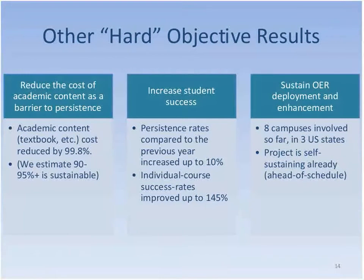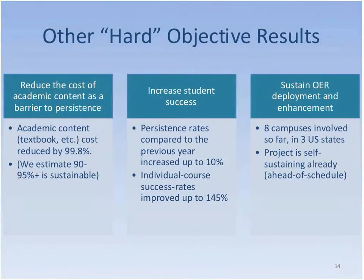In terms of student success, there were 27 courses in the controlled pilot. 26 of the 27 statistically significantly outperformed the proprietary courses they replaced — in some cases by as much as 145% term over term. Developmental math and intermediate algebra showed gains of 145% in students earning a C or better. Across all eight participating campuses, student persistence was up as much as 10%, with the largest gains coming among the most economically disadvantaged students. The eight campuses' sustaining model is on target, and the goal is wholly self-sustaining footing within the next couple of years.